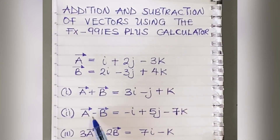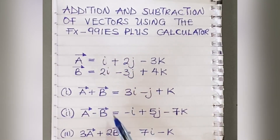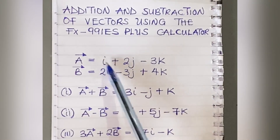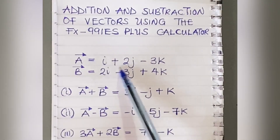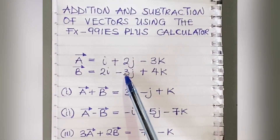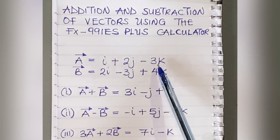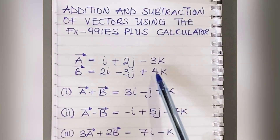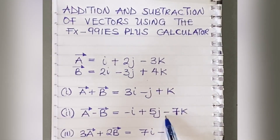For A minus B: the i coefficient is 1 minus 2, giving minus i. For j: plus 2 minus minus 3 gives plus 2 plus 3, which equals plus 5j. For k: minus 3 minus plus 4 gives minus 3 minus 4, which equals minus 7k. So A minus B equals minus i plus 5j minus 7k.